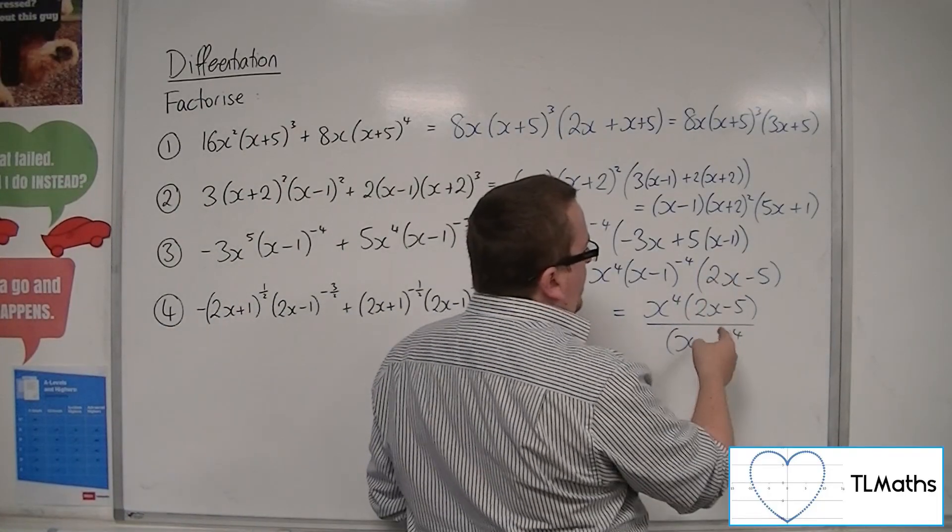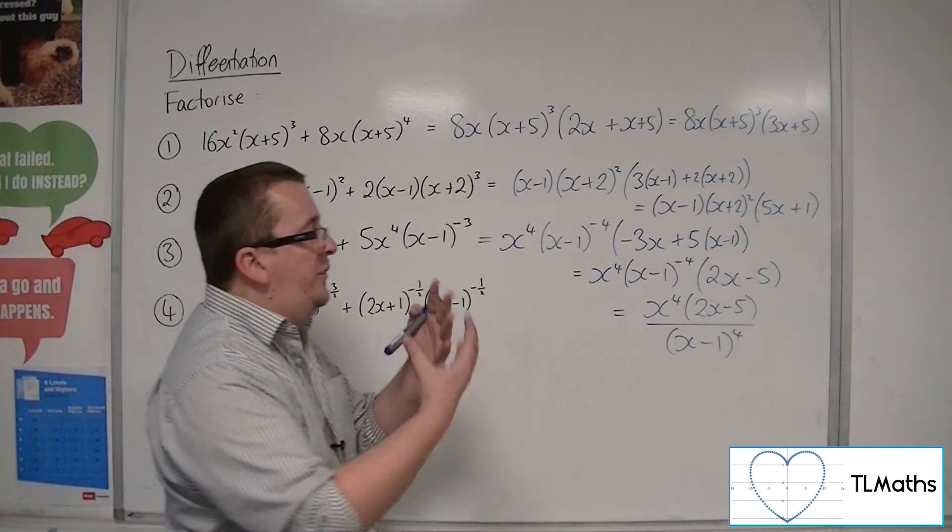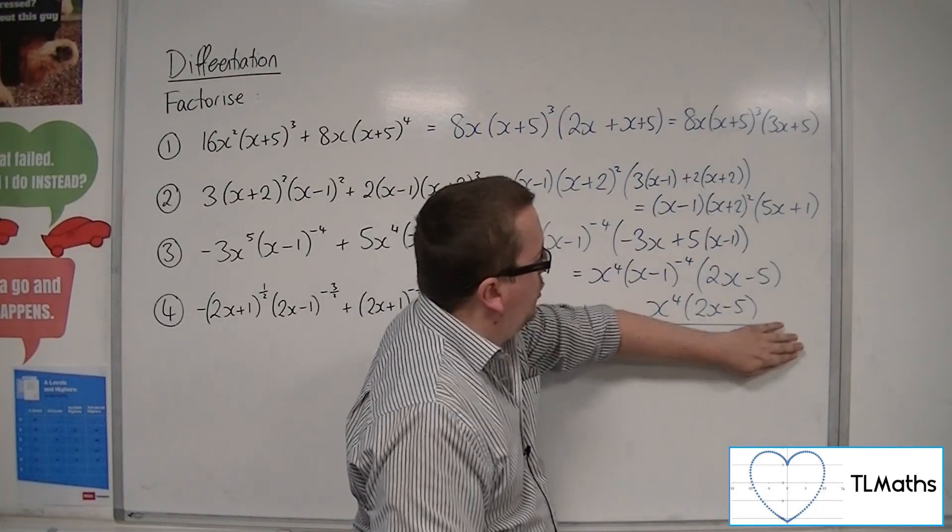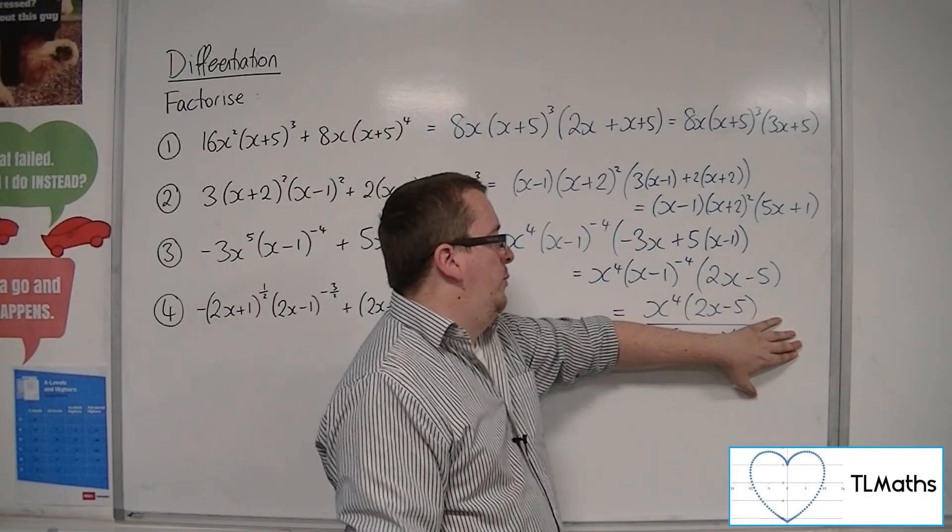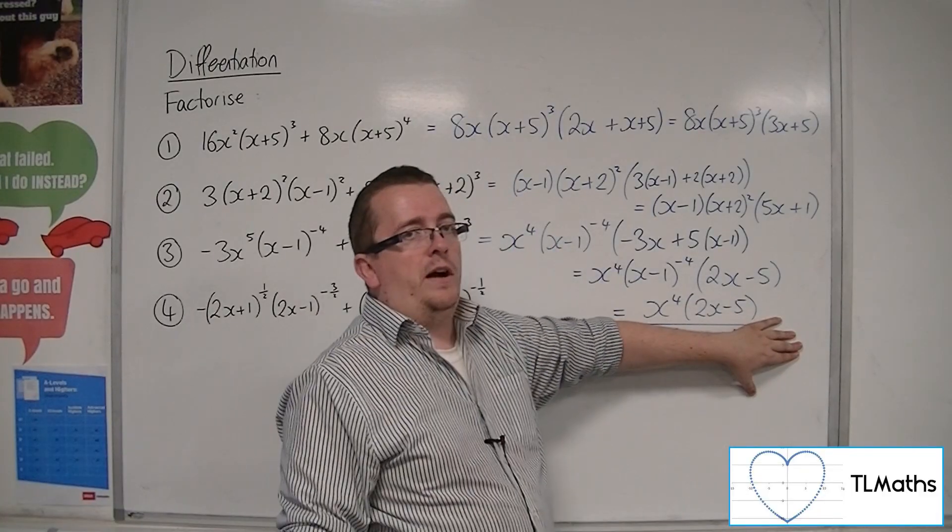Now if I was then asked where are the stationary points, then the only way a fraction can be 0 is if the numerator is 0. So that (x-1)⁴ makes no difference. So the two stationary points would be at x is 0 and x is 5/2.